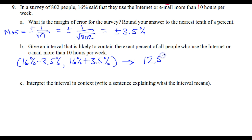We have 12.5%. On the other hand, 16% plus 3.5% is going to be 19.5%. So this is the interval that is likely to contain the true percent of the population who uses 10 hours of internet or email. It will be somewhere in between these two numbers.